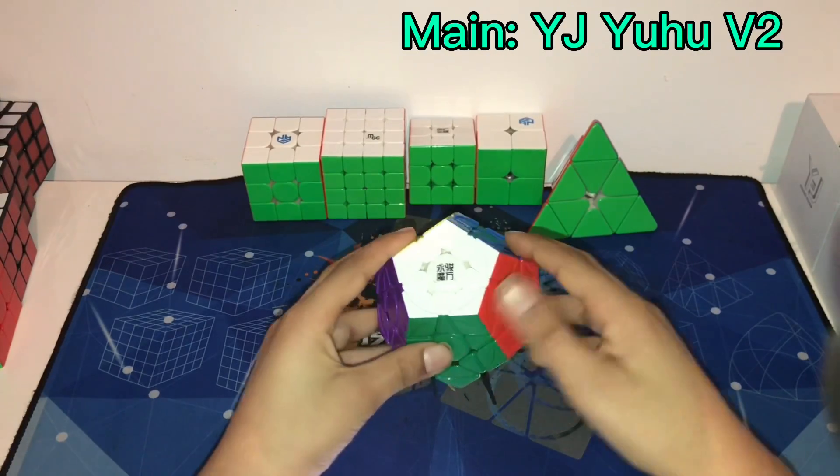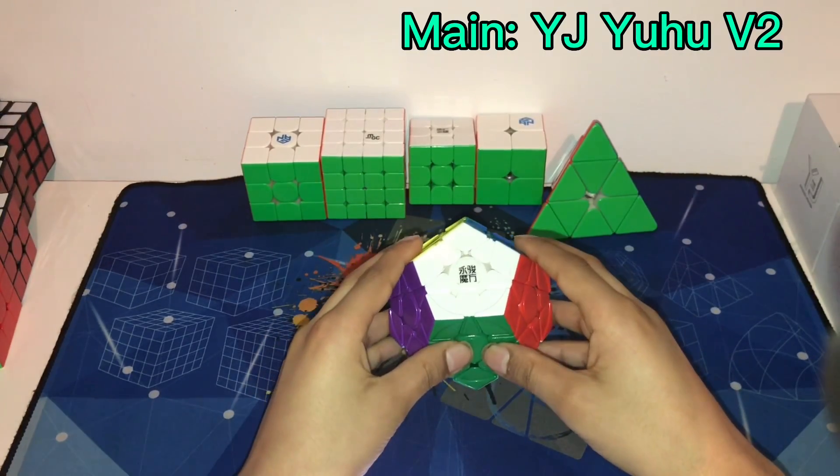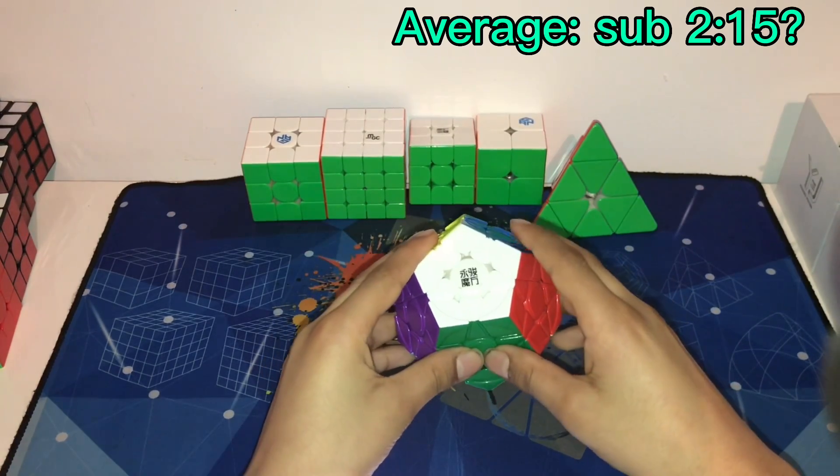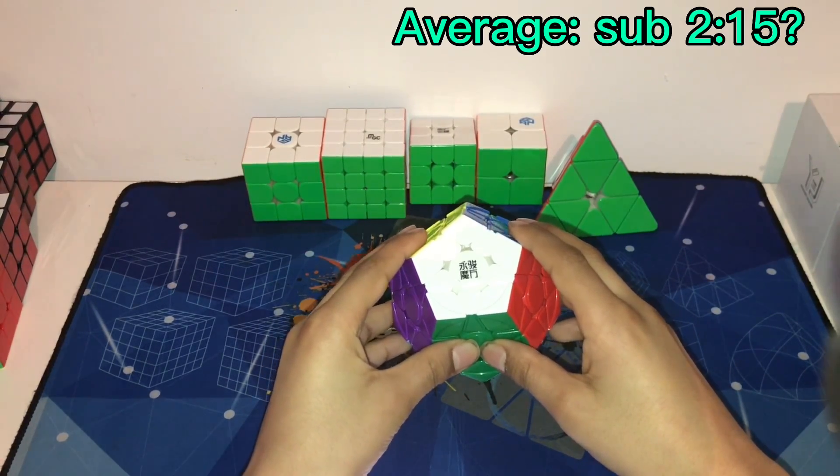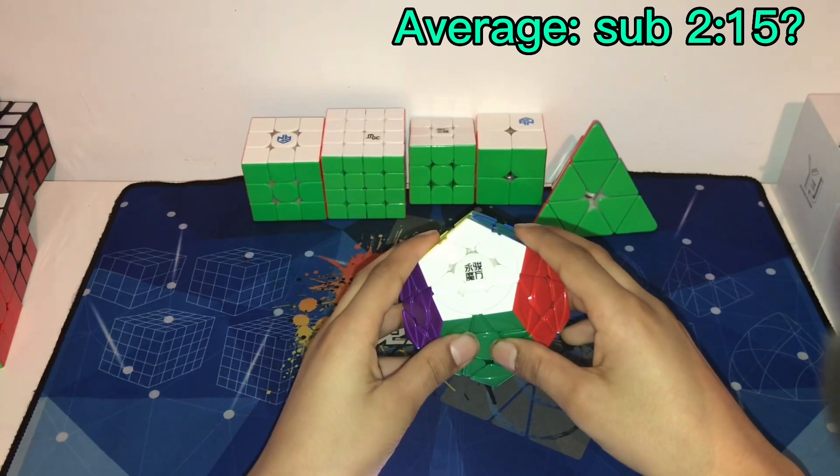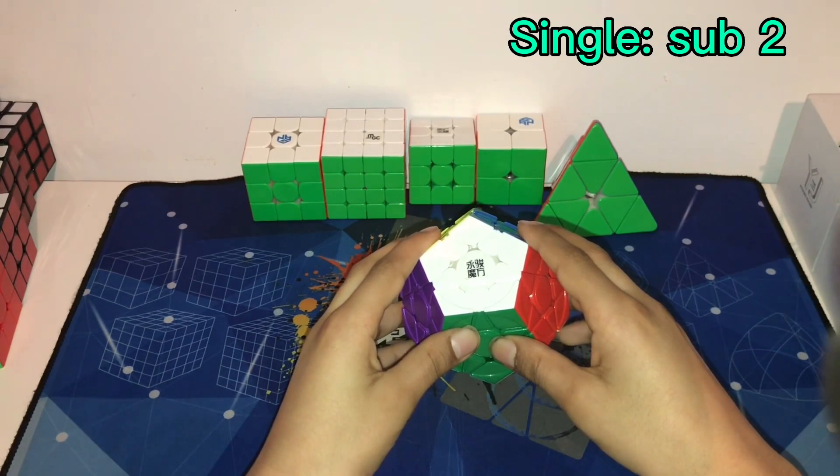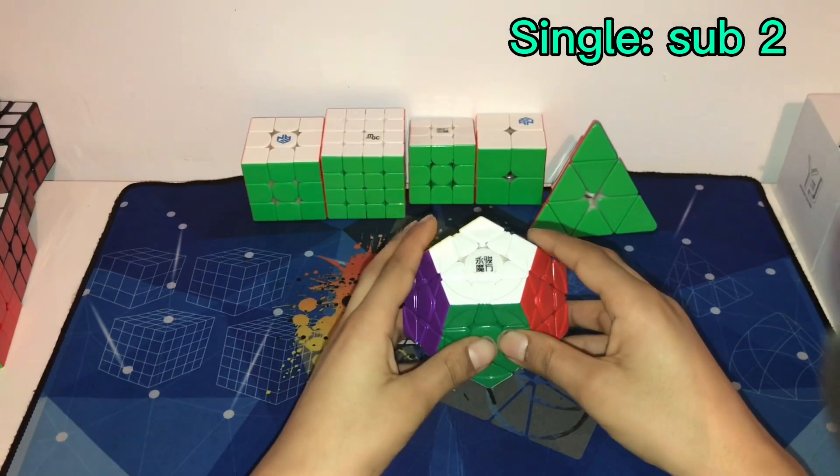Let's move on to Megaminx. I'm gonna use the YJ Uhu V2 as my main. To be honest, I'm not gonna get an average as the cutoff is 1 minute 45 seconds, and my PB at home is around 10 seconds slower than that because I rarely practice it. But just in case I do, I'll go for a sub 2:15 average, and if I don't make it, a sub 2 single. But to be honest, even that single might be hard.